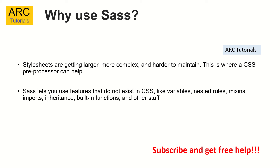For example, you can declare one variable and use that variable everywhere else, which gives you the ability to optimize your code. Sass lets us use features that do not exist in CSS, like variables, nested rules, mixins, imports, inheritance, built-in functions, and other stuff. Using these features, it has become really powerful.